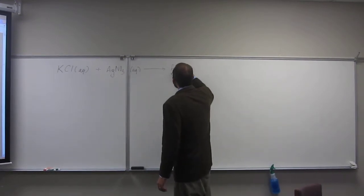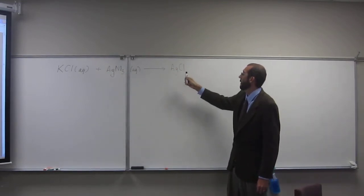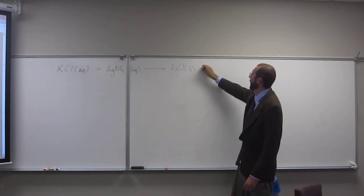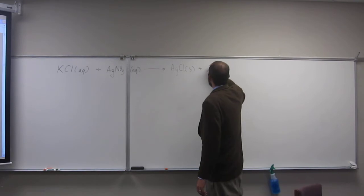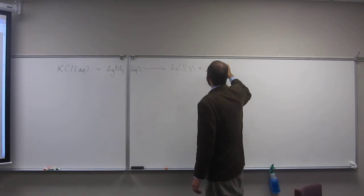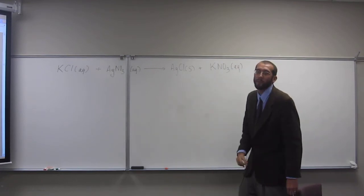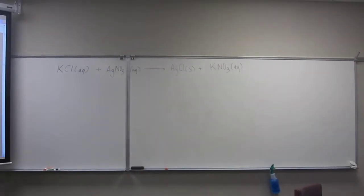So you want to put that first, AgCl, because it's going to precipitate. What's the state of matter? Solid. Yeah, solid. And then the rest of it is going to be what? Come on, guys. KNO3. KNO3. And it's going to be what state of matter? Aqueous. Why aqueous? Because it doesn't precipitate. It's still in solution.